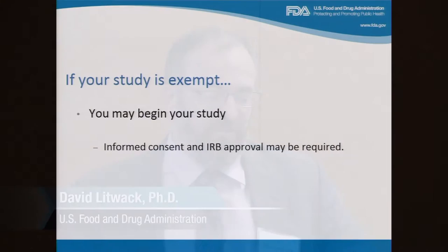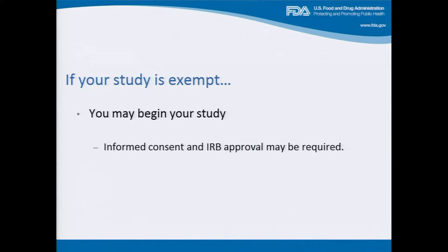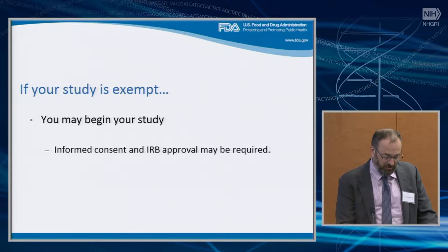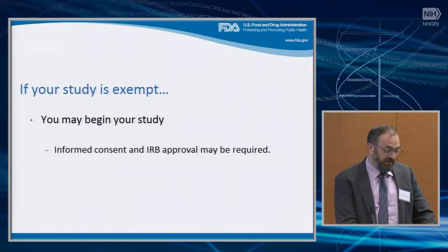So just very briefly, we've talked about these three categories: being exempt, non-significant risk, or significant risk. What does that mean if your study is exempt? At this point you can begin your study, assuming you've met all the other appropriate requirements — you have informed consent and IRB approval where required, and things like that.